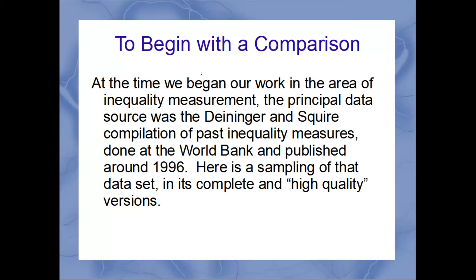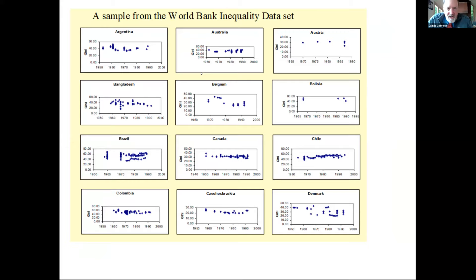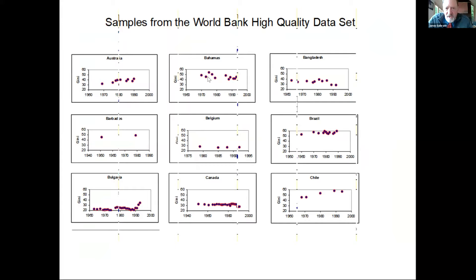There are multiple numbers for any given year, so one has to have criteria for deciding what the numbers are. Even if you have that — and Deininger and Squire did try to come up with a set of high-quality numbers — two things happened: the dataset becomes even more sparse with more gaps, and it's still very hard to find anything particularly useful in these numbers. So the problem we faced was that to begin on the kind of project we were interested in, we had to come up with another way of collecting information about economic inequality.